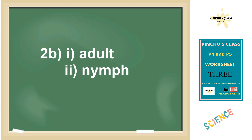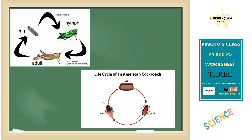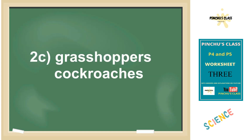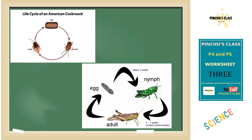Number two B: stage N is known as the adult. From the adult we go to X and then back to the nymph, so M is nymph. For two C, insects with such a life cycle include cockroaches, which have an incomplete life cycle, and even grasshoppers.